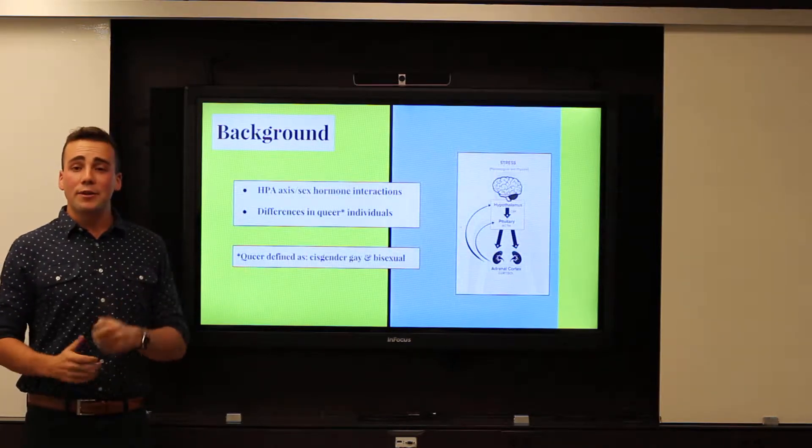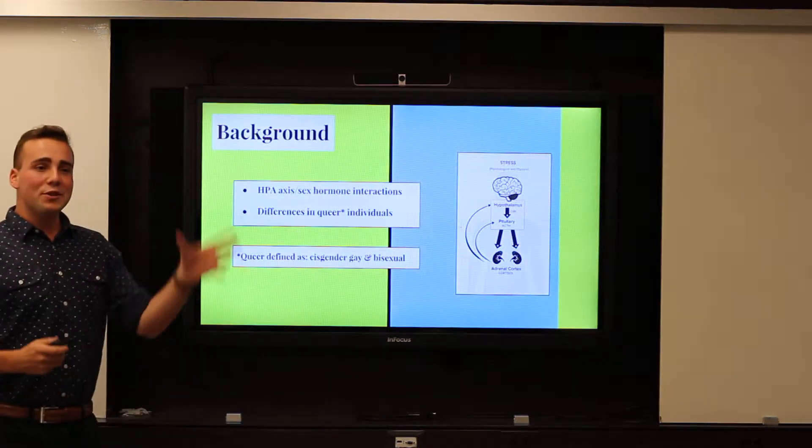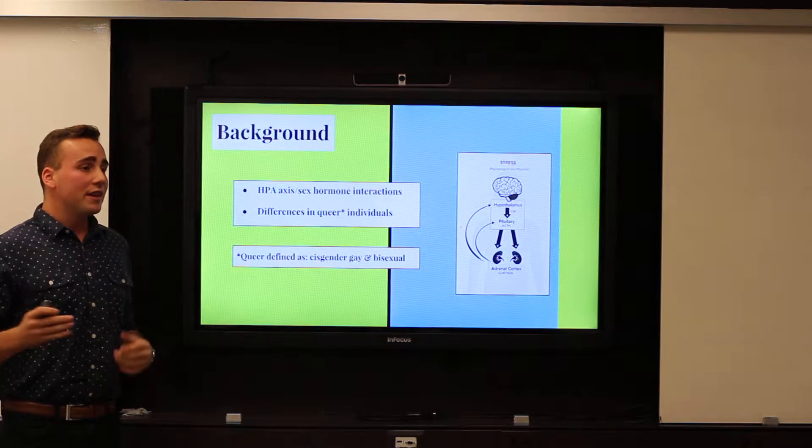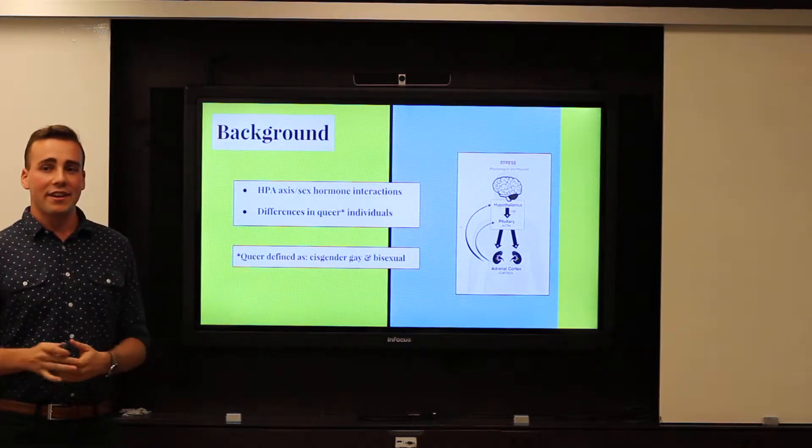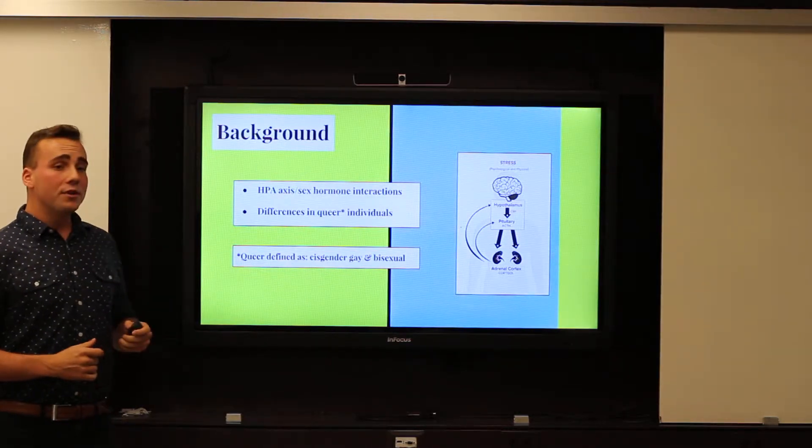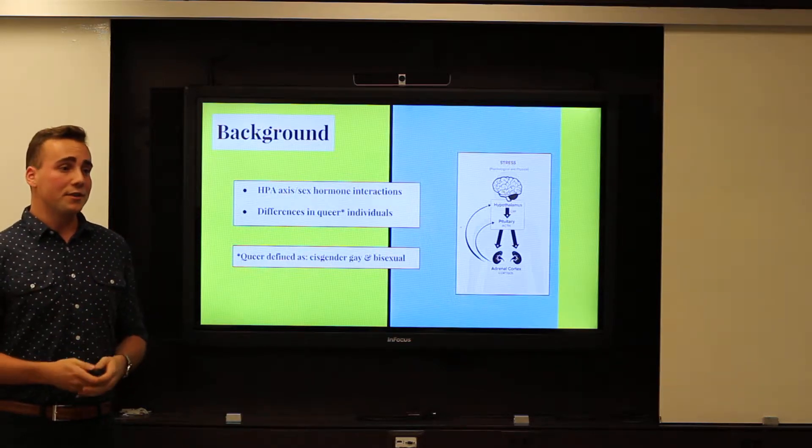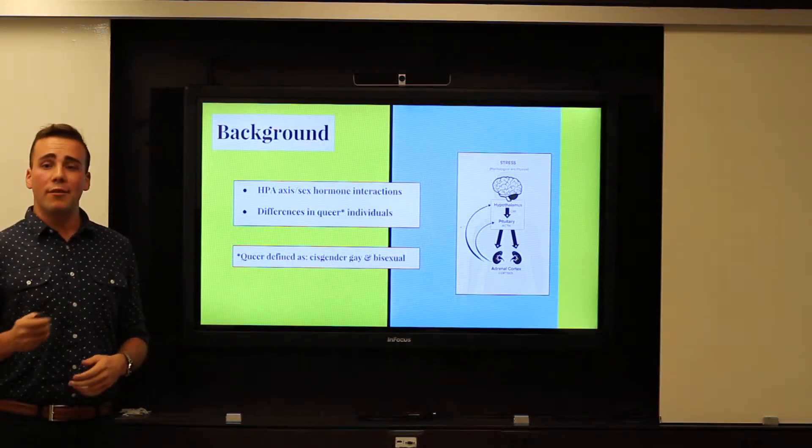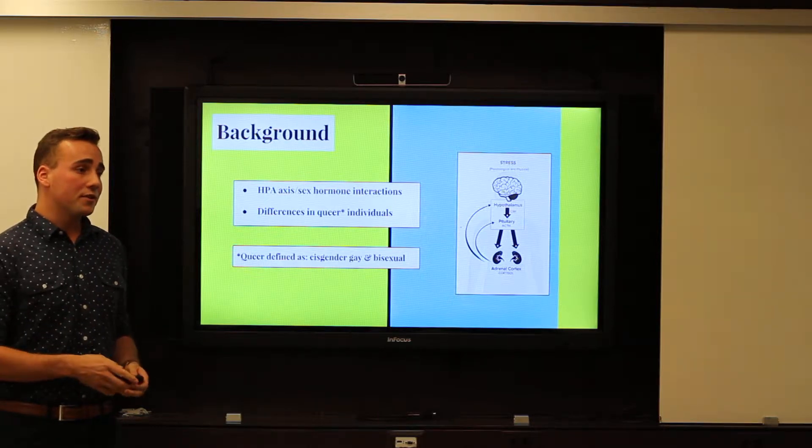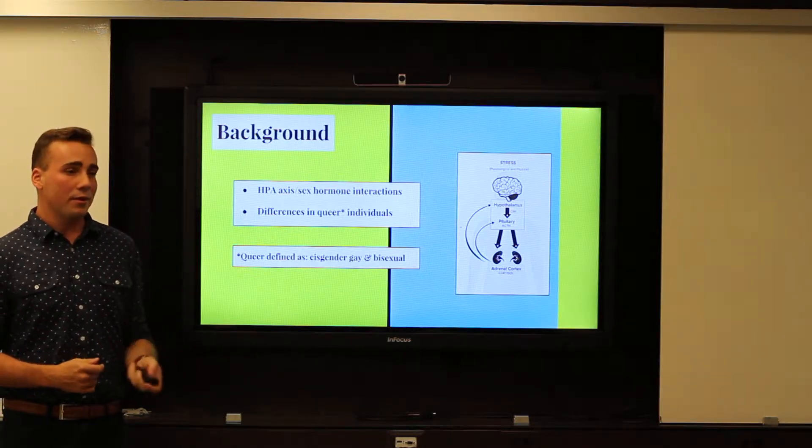But first, some background. As we learned in Sapolsky, there are interactions between the HPA axis and sex hormones that influence one's stress reactivity. Additionally, queer individuals actually have differences bodily than heterosexual individuals. For example, queer people are more at risk for developing psychological disorders like major depressive disorder and bipolar disorder.